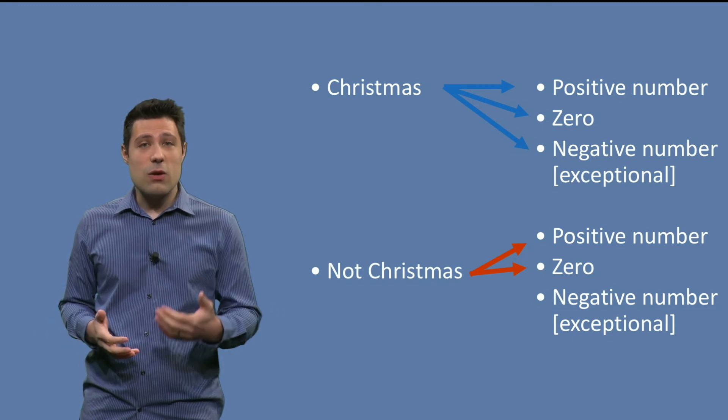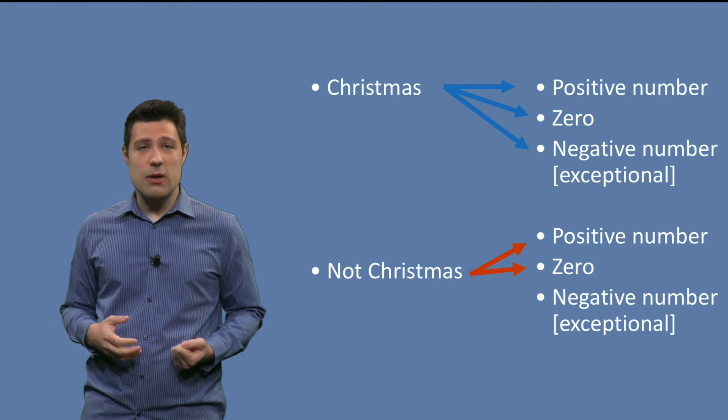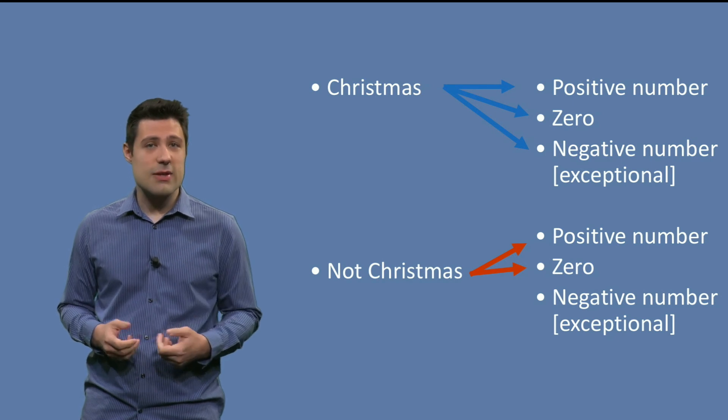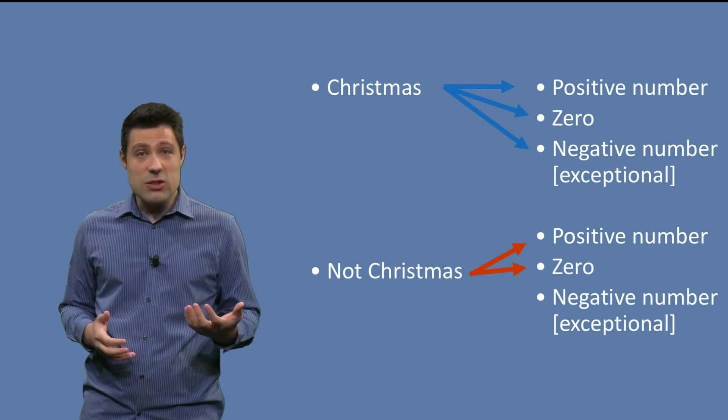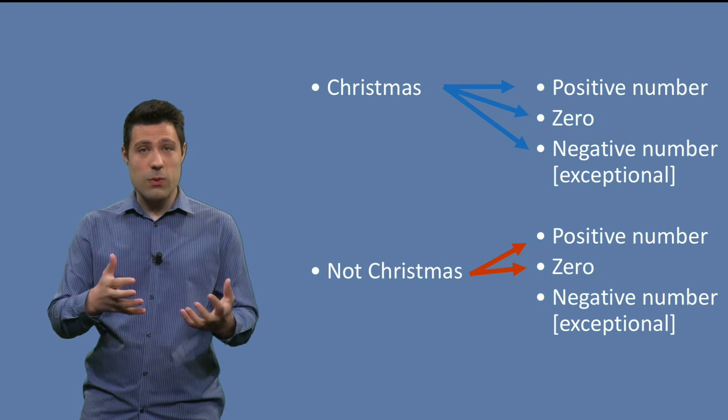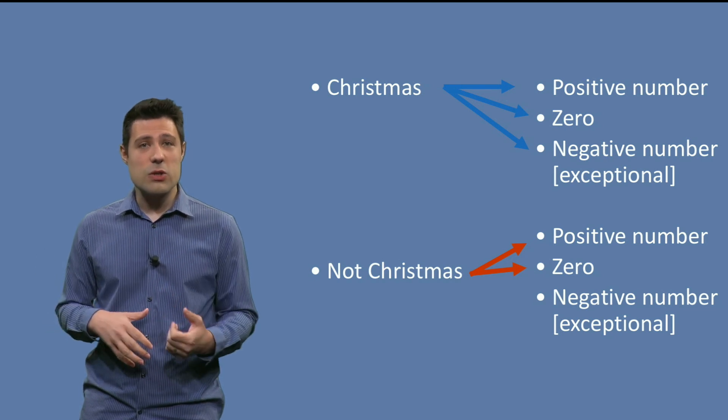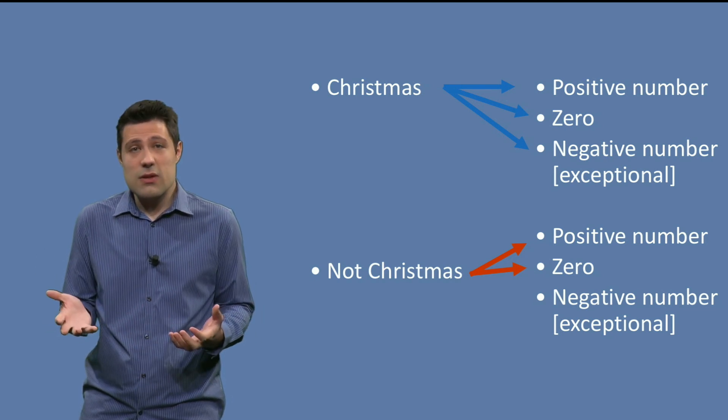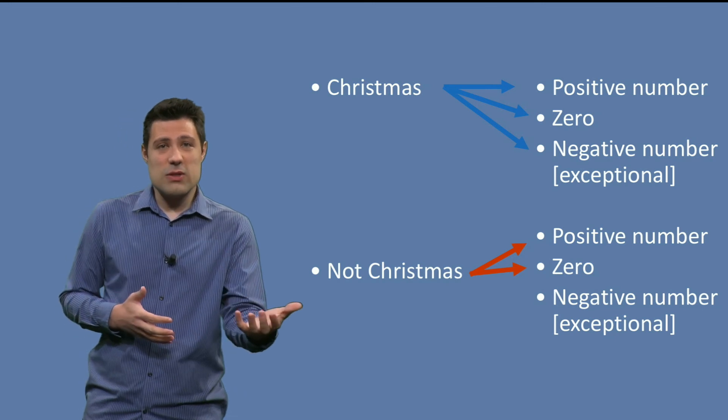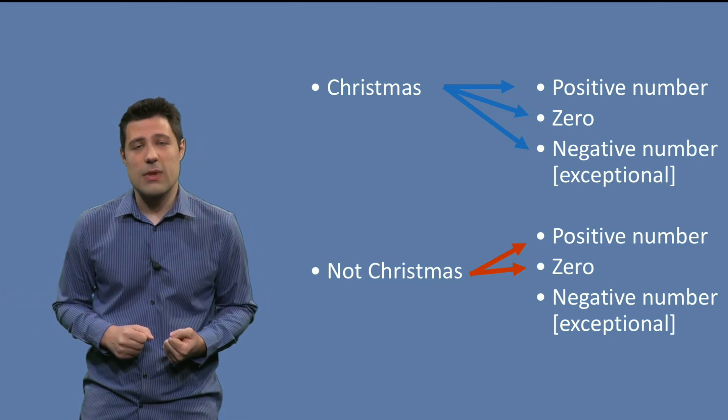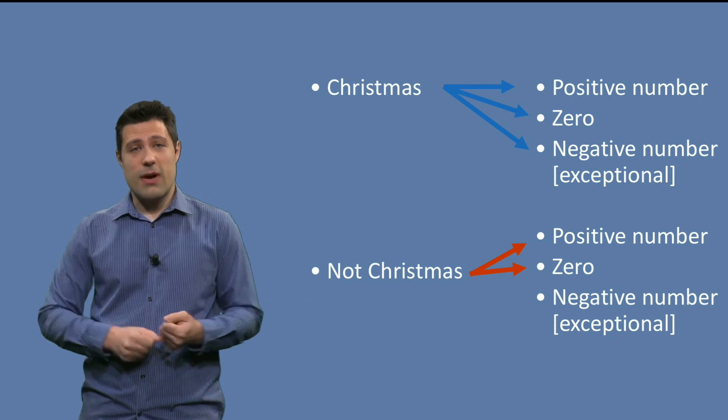That is why we add constraints, so that we can reduce the combinations. In this example, the negative number was the exceptional case. Let's then just test it once and not combine it with the others. For example, Christmas negative number, we test. But we don't test not Christmas and negative number. We end up with five cases.